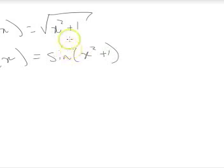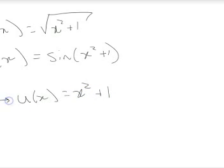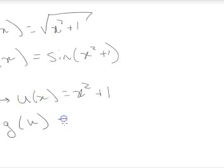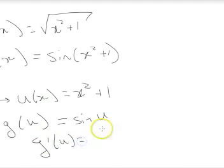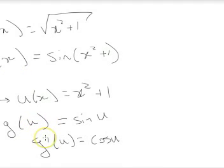However, what if we defined another function u of x, and called that x squared plus 1? Using g, we could say g with respect to u would be equal to sine u. Then we could find g prime with respect to u, and we know that is cosine u. So we can find the derivative with respect to u — but what we really want to find is the derivative with respect to x. That's where the chain rule comes in.